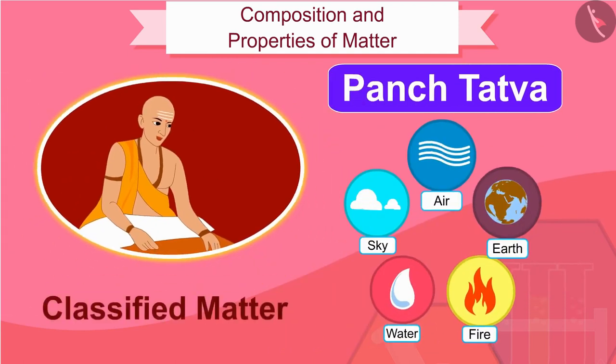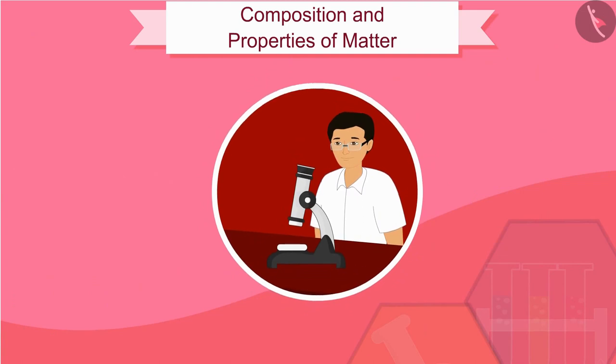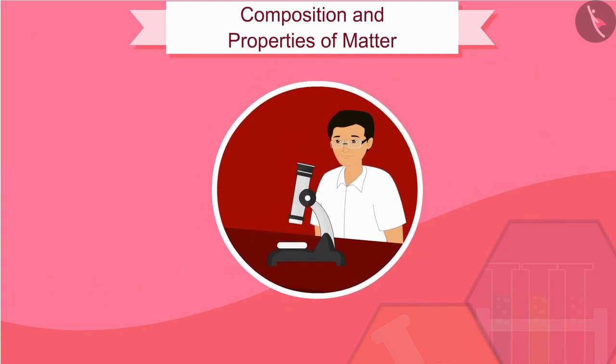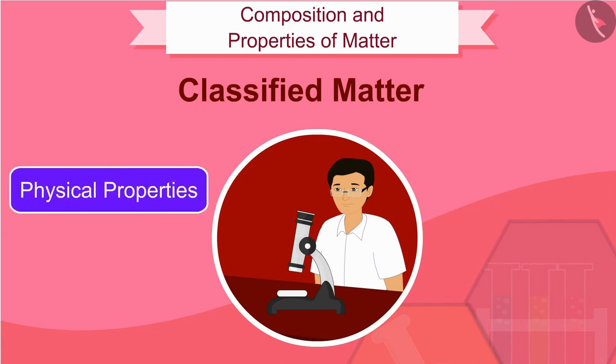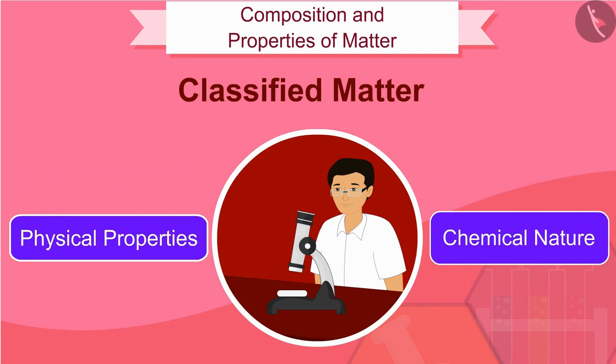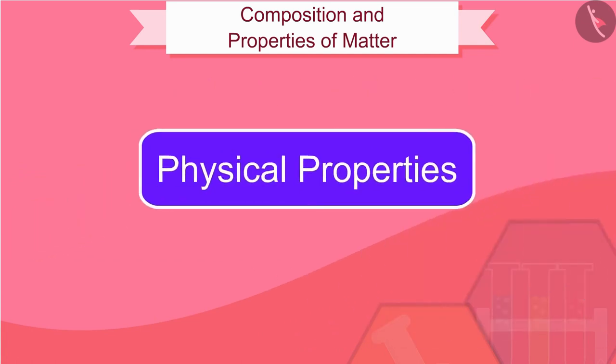Philosophers of the time have classified matter in a similar way. Modern scientists have evolved two types of classification of matter based on their physical properties and chemical nature. Let us learn about matter based on physical properties in this video.